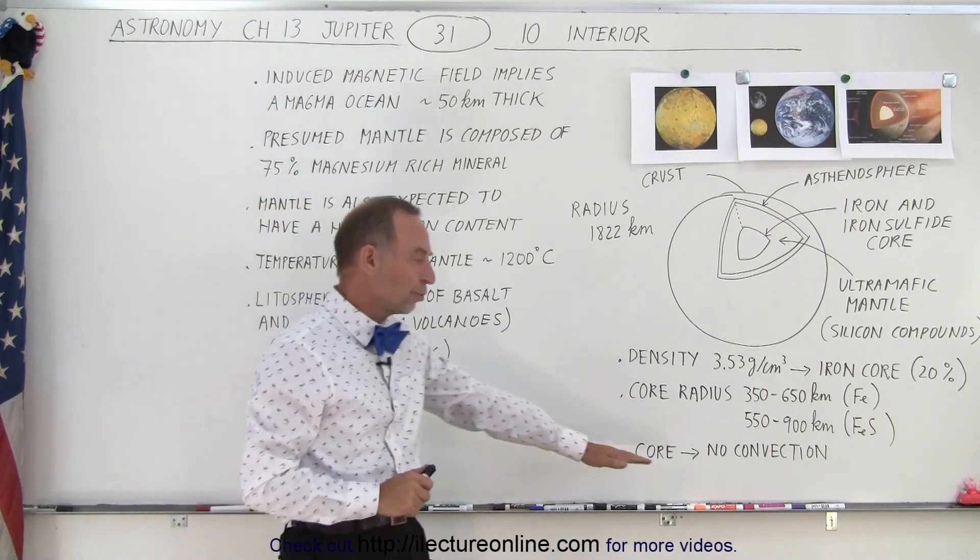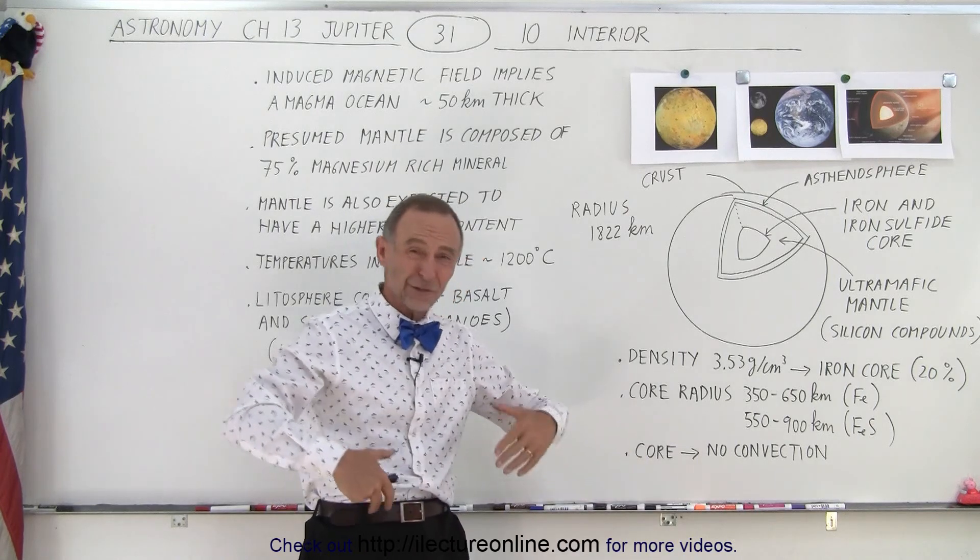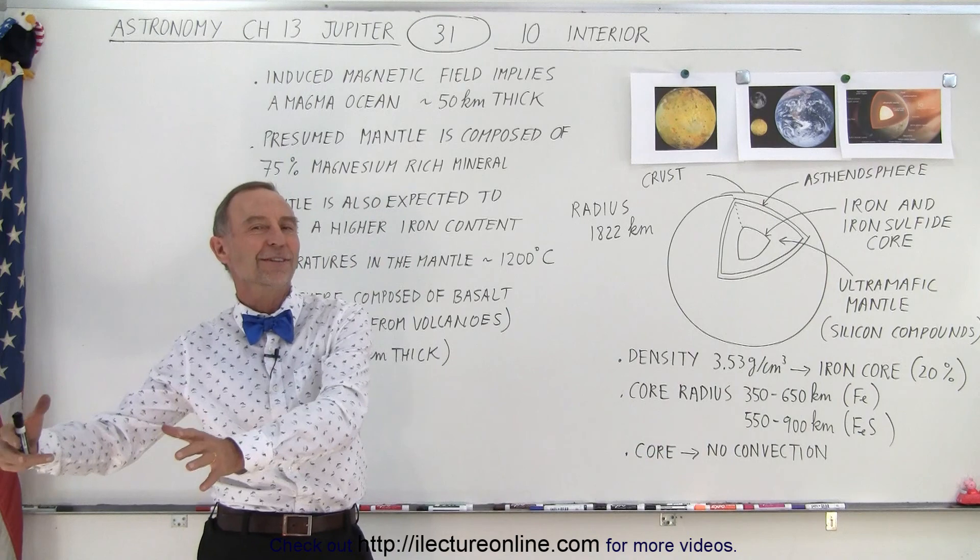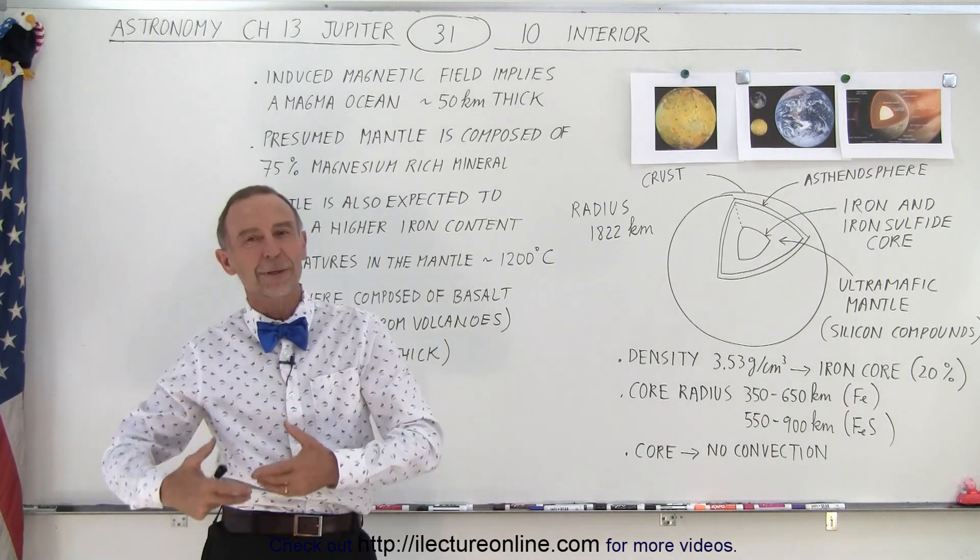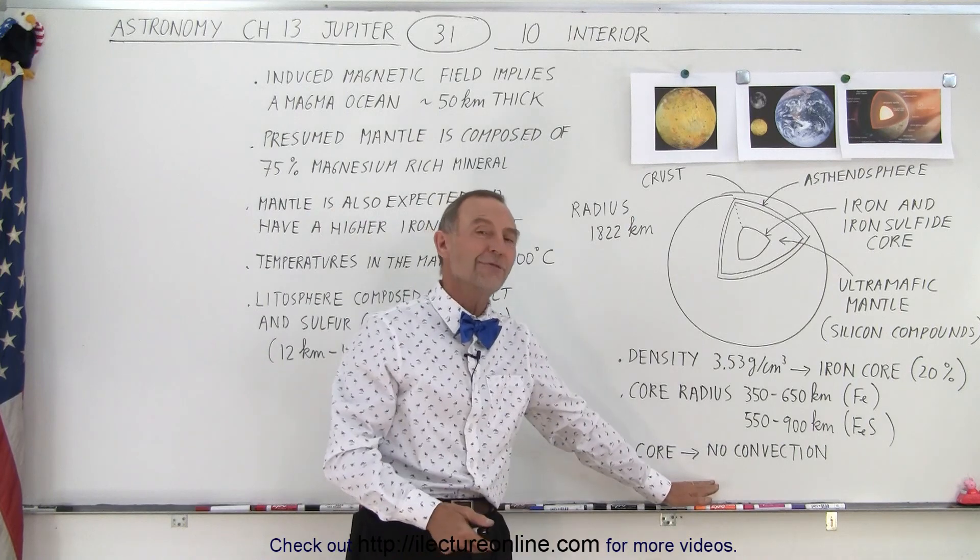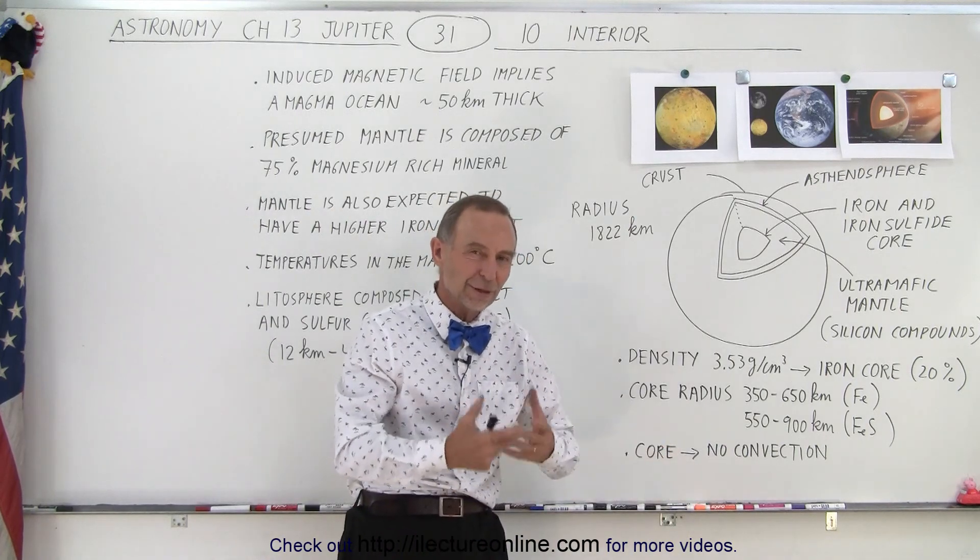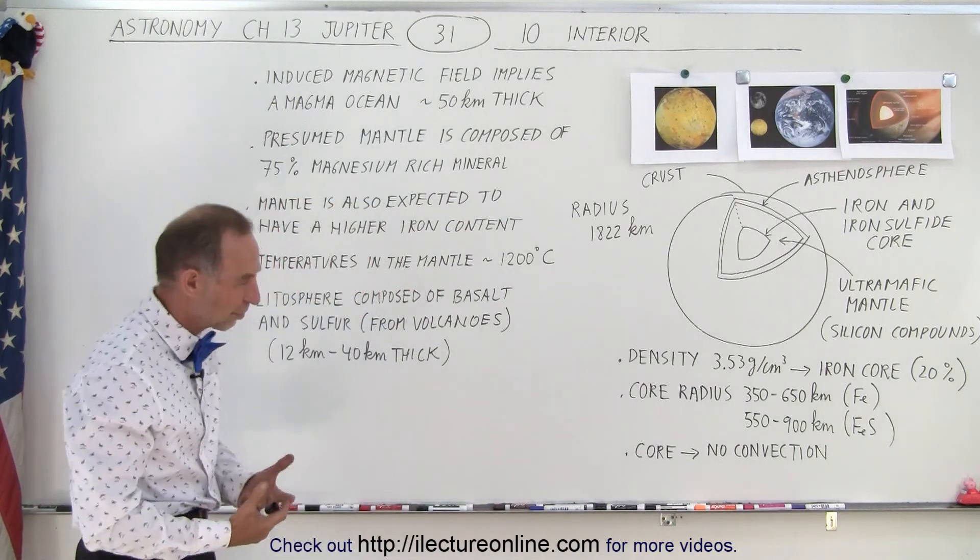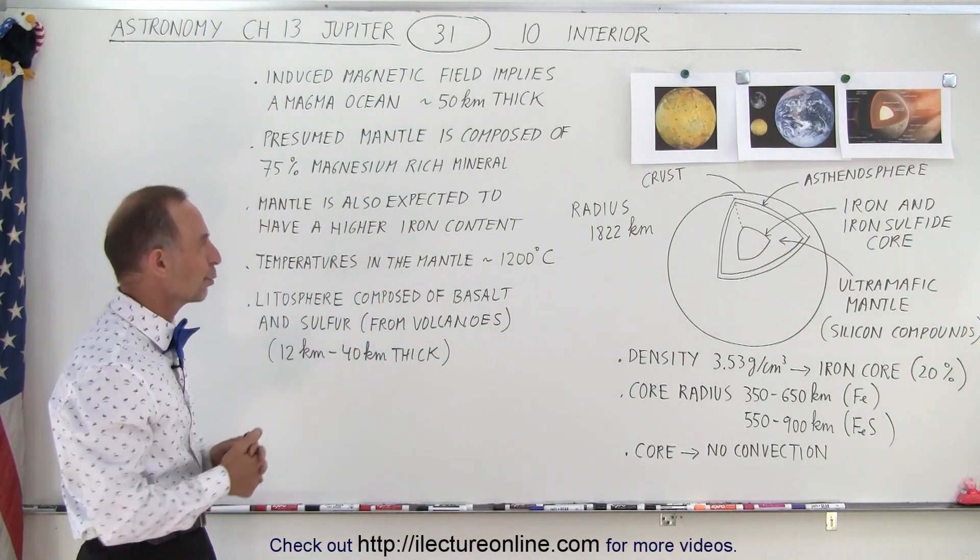We do realize that there's no convection in the core. Actually, we know there's no self-generated magnetic field. If there's no self-generated magnetic field, then we conclude there's no convection in the core, no movement of the core, and therefore no generation of electricity, no generation of current, and therefore no magnetic field.